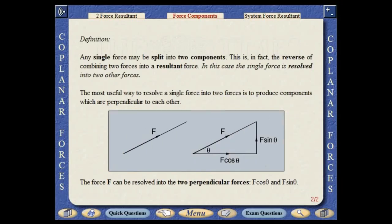Any single force can be split into two components. This is in fact the reverse of combining two forces into a resultant force. In this case, the single force is resolved into two other forces. It is often extremely useful to resolve a single force into two forces in order to produce components which are perpendicular to each other. In this example, the force is resolved into the two perpendicular forces f times cosine theta and f times sine theta.